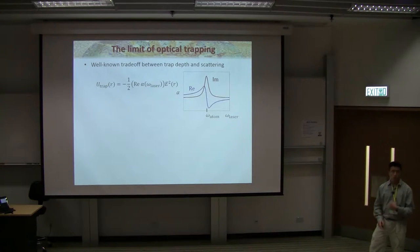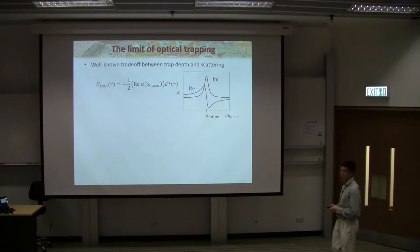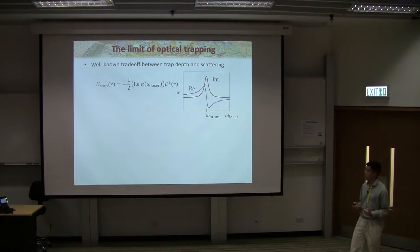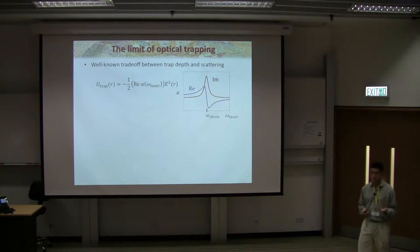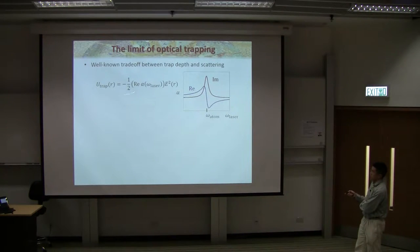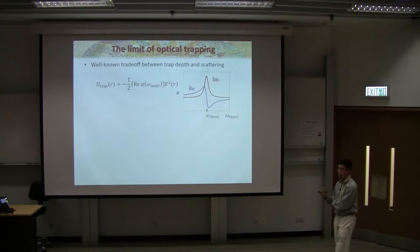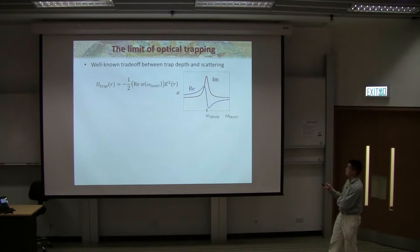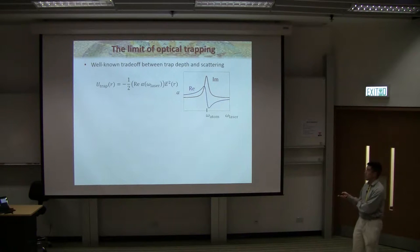Before discussing Casimir-Polder forces for atom trapping, let's talk about the conventional approach: trapping atoms by optical forces. An atom is basically nothing more than a fancy little bead of glass. You shine an electromagnetic field, and the atom has some dipole polarizability that depends on frequency. The mechanical potential the atom sees is exactly what a glass bead would see in an optical tweezer — proportional to the polarizability of the atom times the local electric field intensity. Depending on whether alpha is positive or negative, the atom will be high-intensity or low-intensity seeking.